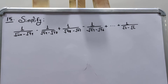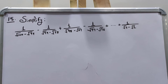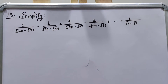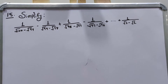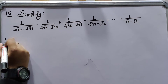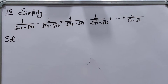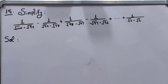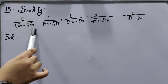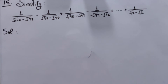This is question number 15 of paper 2 mathematics part C. So let's start with the solution. As you can see, there are irrational numbers in the denominator, so we have to rationalize the denominator.